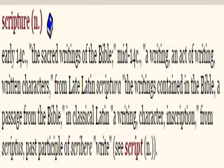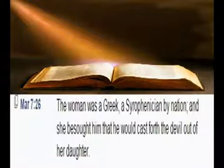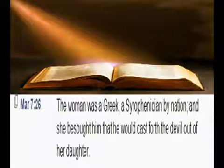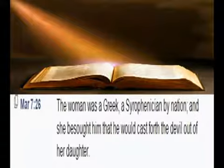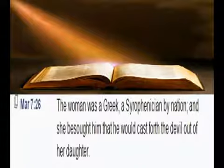Getting back into this — the woman was a Greek. I'm going to go through this again. Mark 7:26. I'll start at 25. It says: 'For a certain woman whose young daughter had an unclean spirit, heard of him and came and fell at his feet. The woman was a Greek, a Syrophoenician by nation, and she besought him that he would cast forth the devil out of her daughter.' We're going to focus on verse 26. The woman was a Greek. I'm going to go to the Blue Letter, G1674.